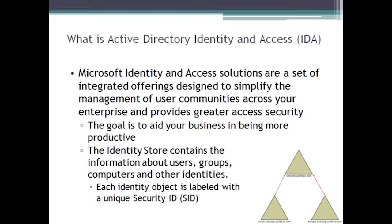Every object, every identity is going to have a Security ID — what we call the SID. Think of it this way: identity is one thing, authentication is something else. An identity, much like a driver's license, is your way of saying this is who I am. Today we have the stripes or encoding on the back that we can run to verify it's a legitimate ID. So we finally see the technical separation: identity is what you provide, and authentication is the verification of your identity. That's what we're trying to keep track of as we work with Active Directory.